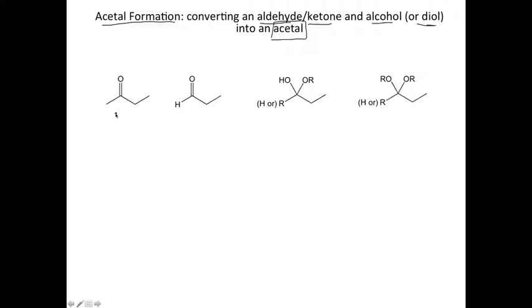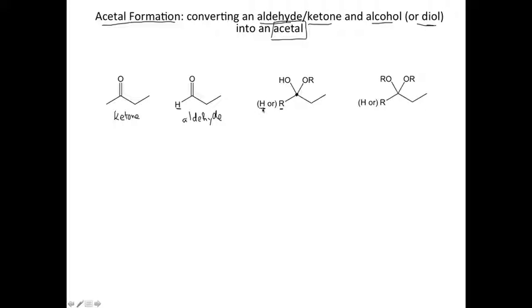The first thing we need to do is make sure we're comfortable with our functional groups. The first structure here is clearly a ketone — we have carbon, carbonyl, carbon. The second functional group is clearly an aldehyde, where one of those carbons has been replaced by a hydrogen. So we can have either aldehyde or ketone.